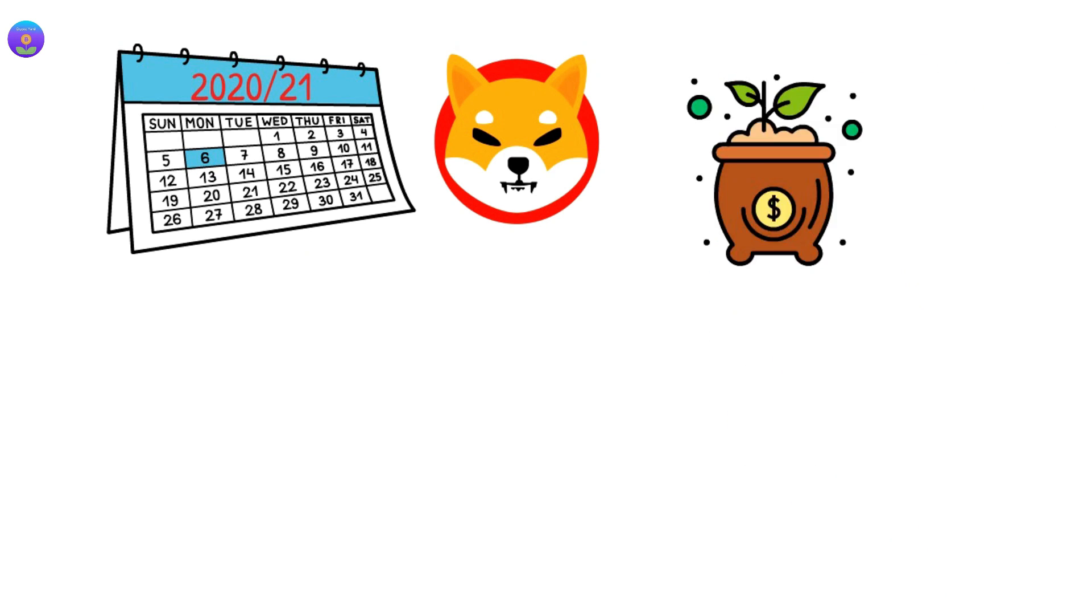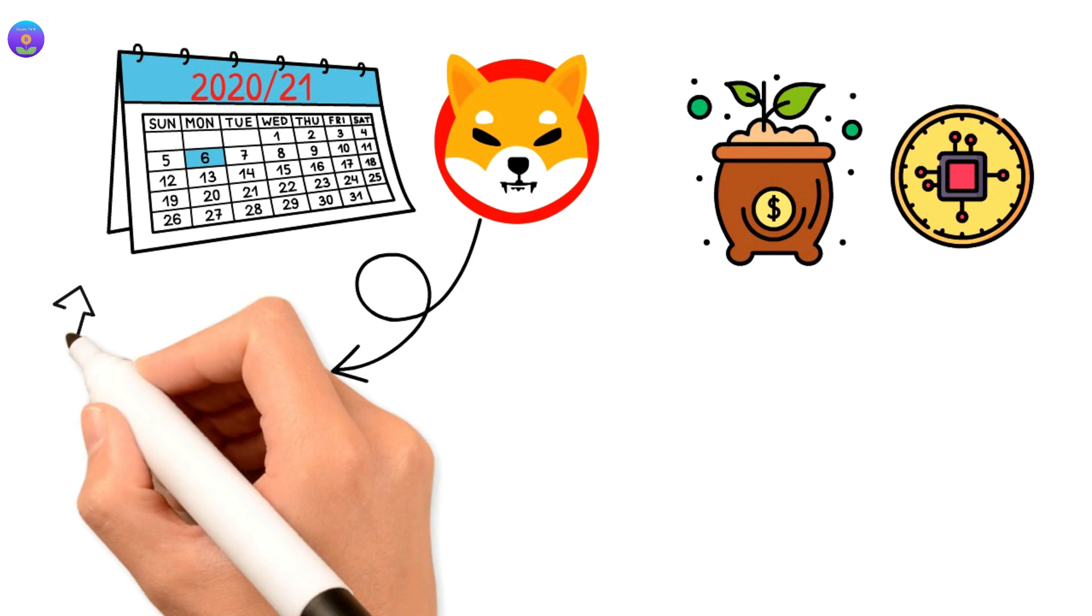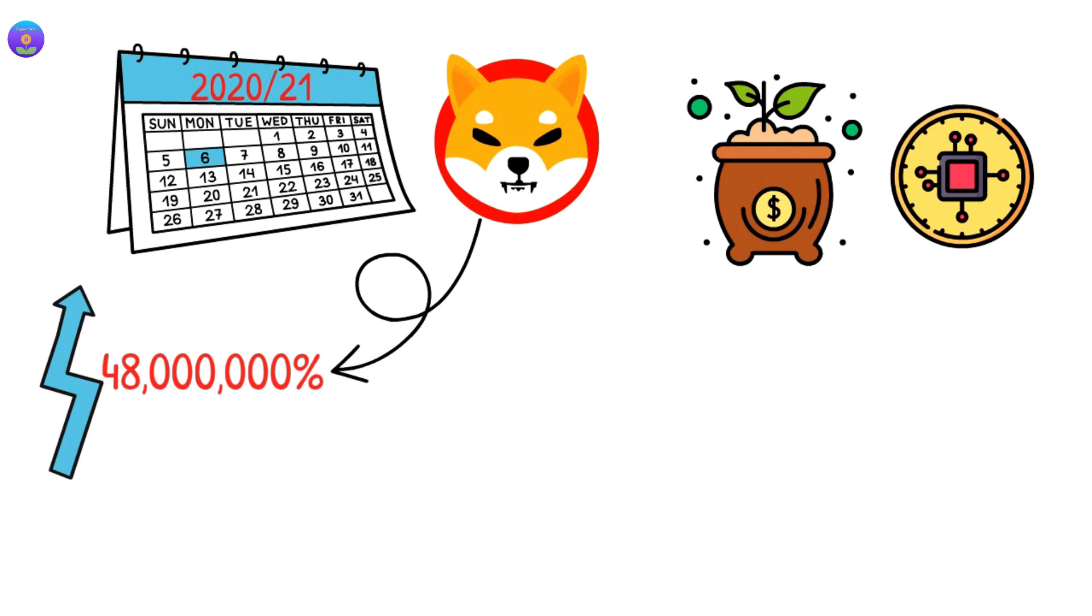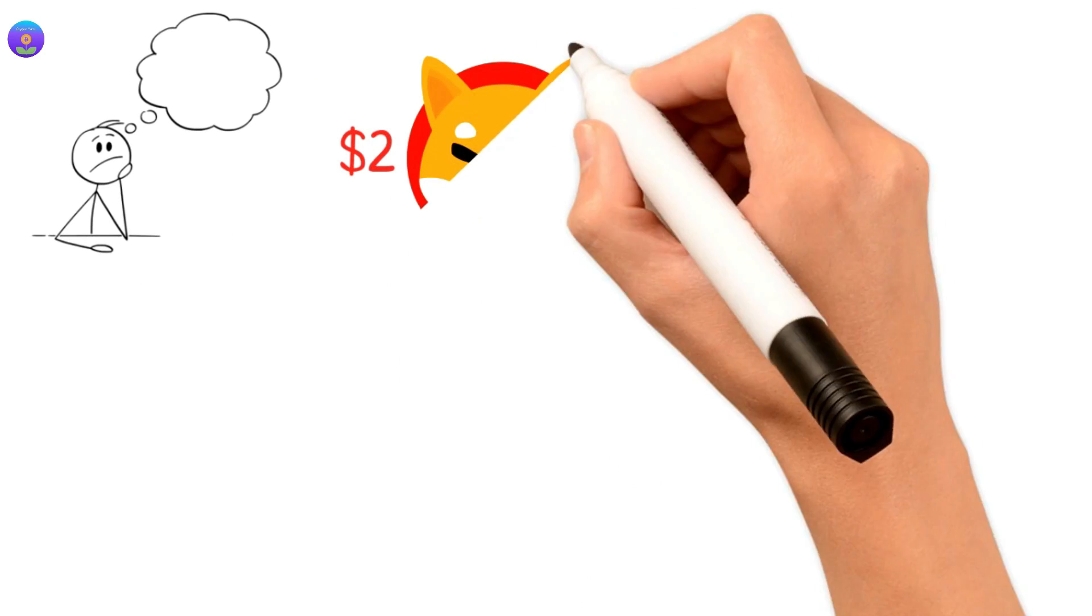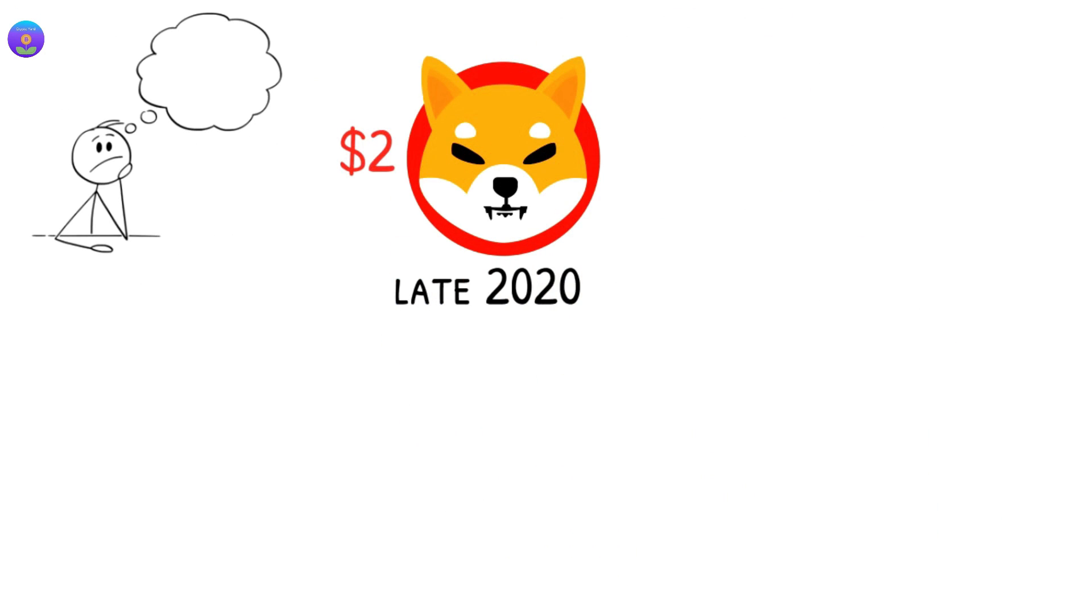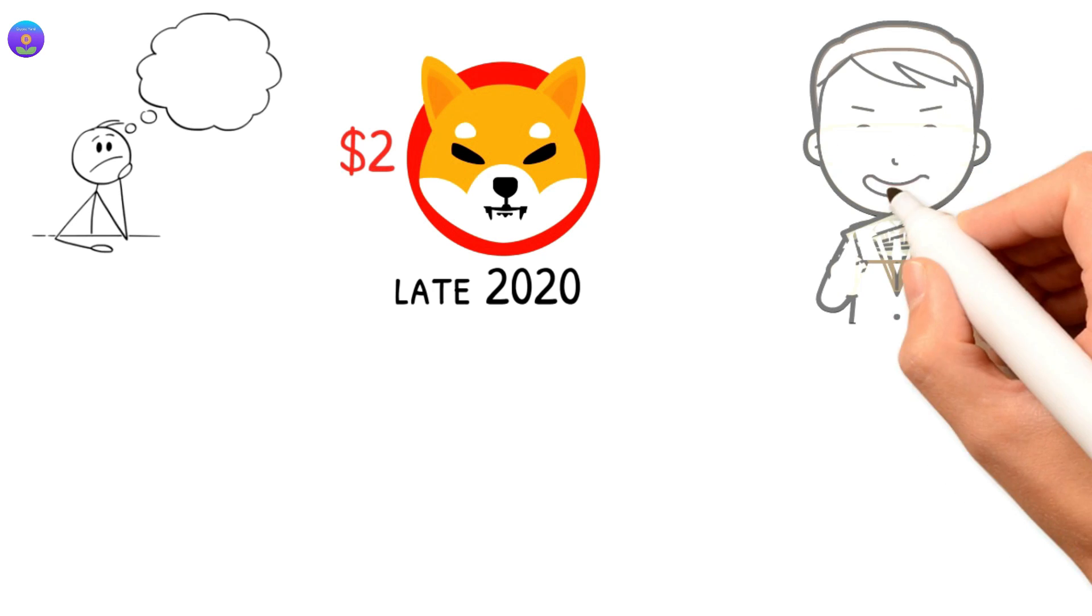In 2020-21, Shiba Inu did something that is pretty much unheard of in investment circles, crypto or otherwise. Shiba Inu went up by over 48 million percent in just a year. To give you an idea of how big of a deal this is, anyone who bought just two dollars worth of Shiba Inu in late 2020 was a millionaire by the end of 2021.